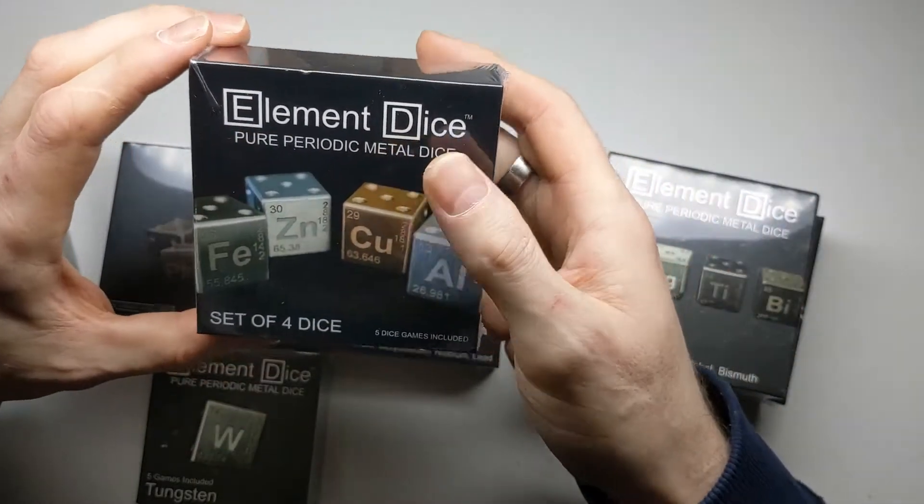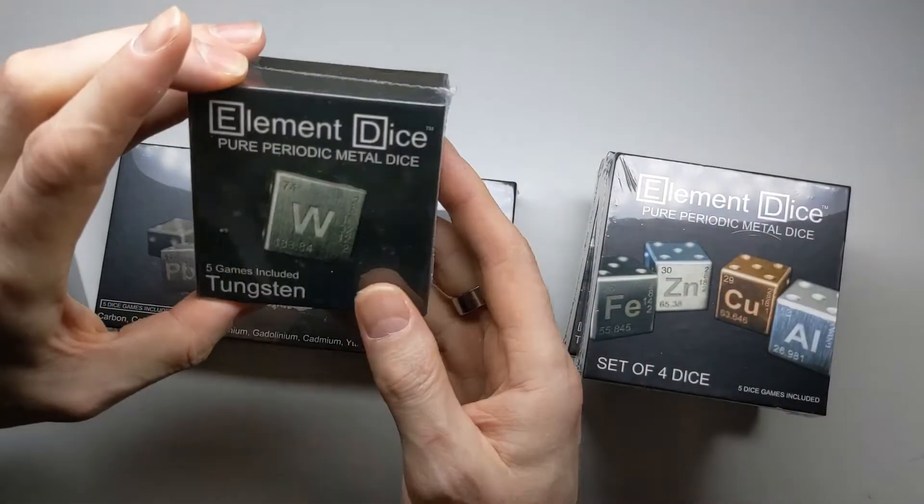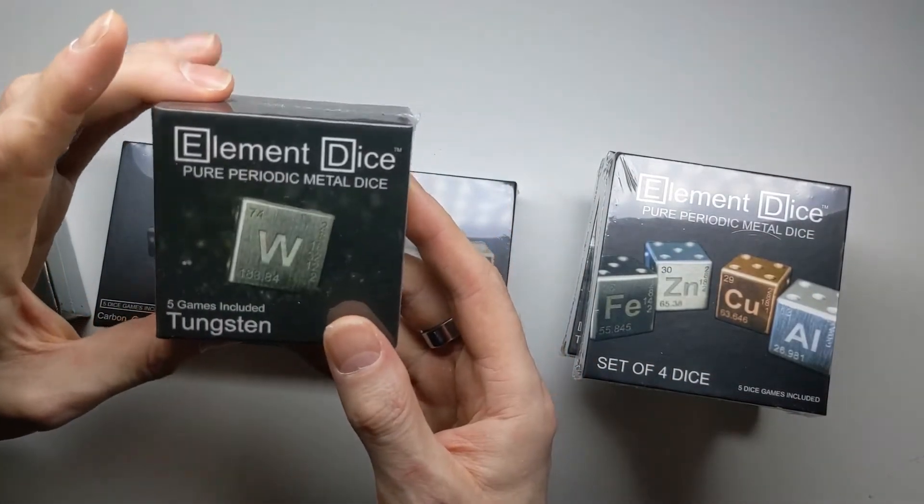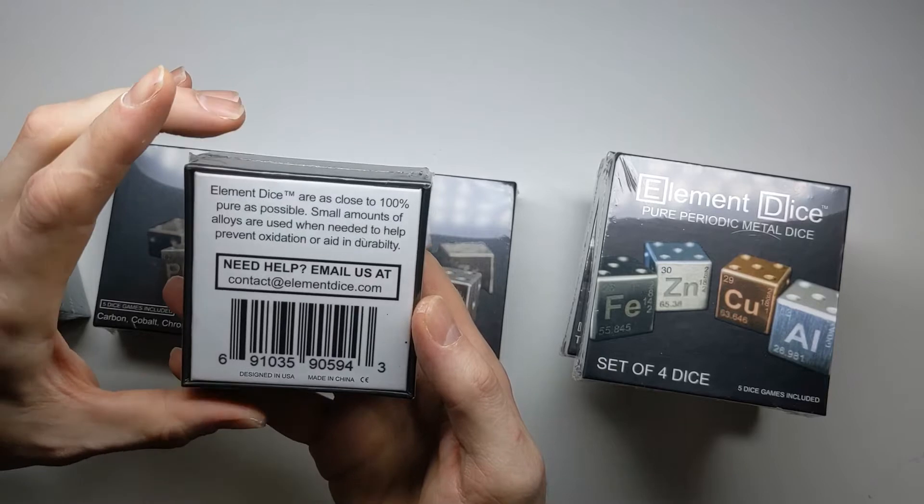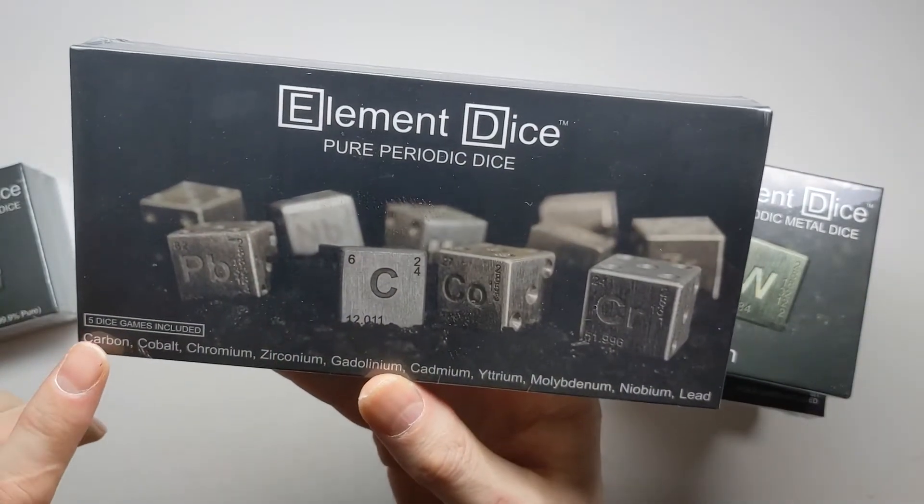Good grief, I've got a lot of these. So what's this? Iron, zinc, copper and aluminum. There's a tungsten one. Wow, that's cool. Is that solid tungsten? Let's see. And then this one, a whole bunch of them.